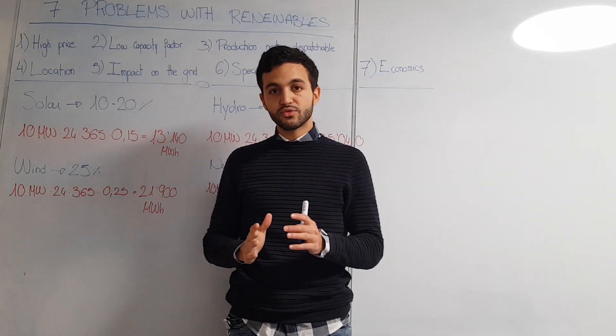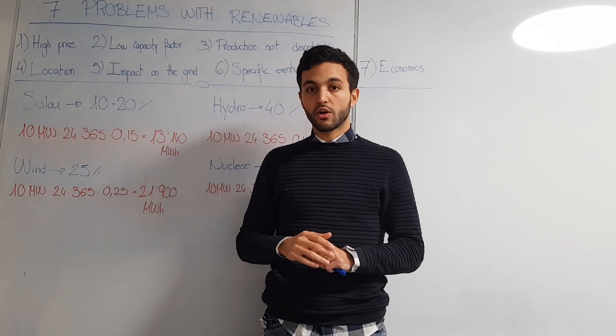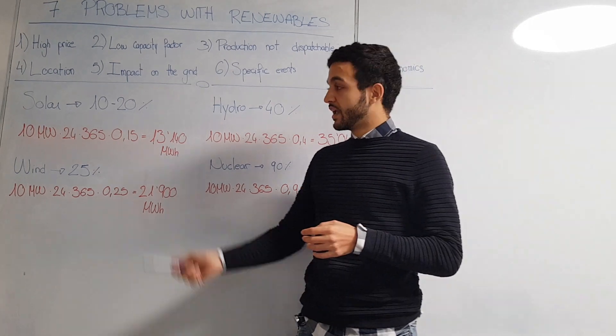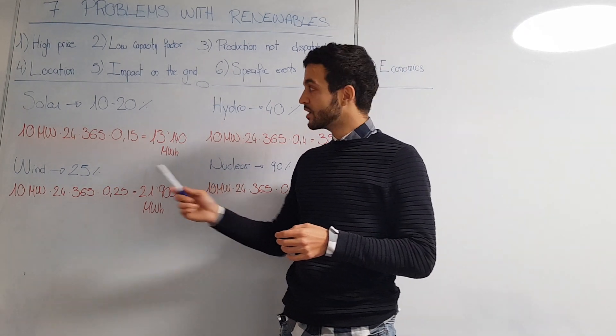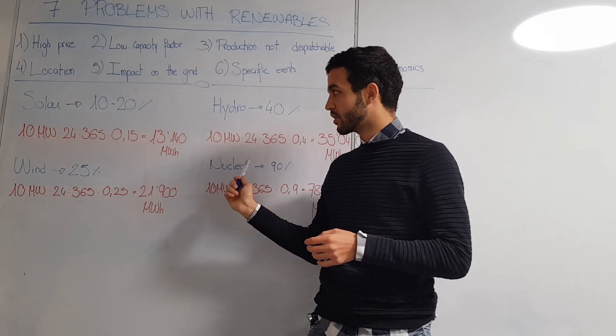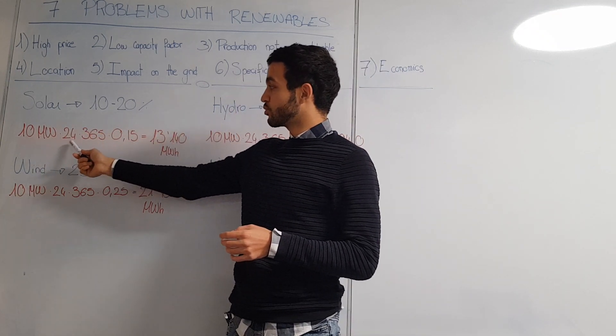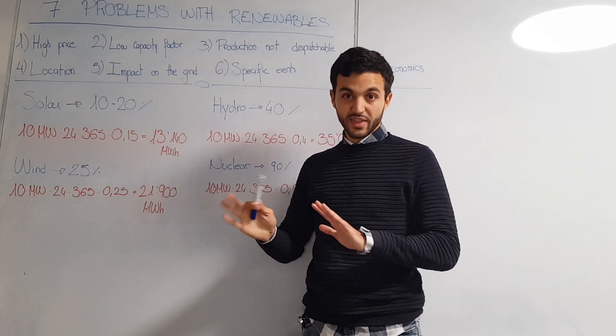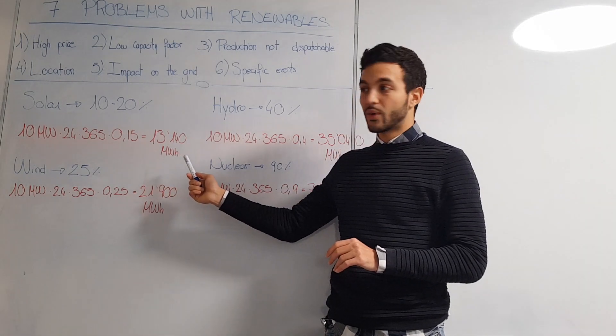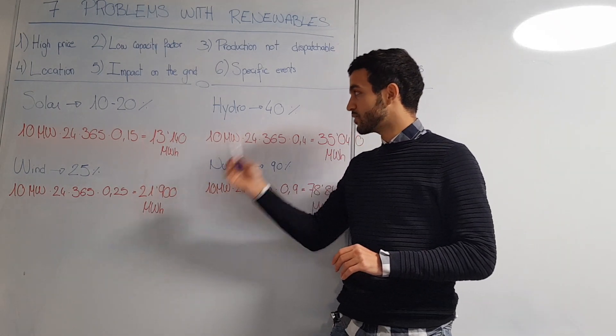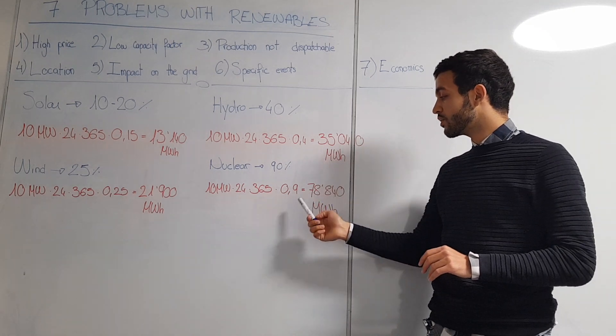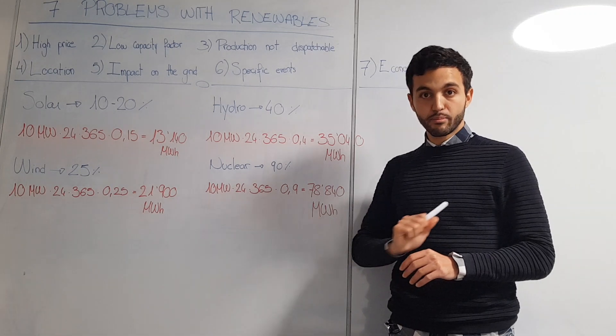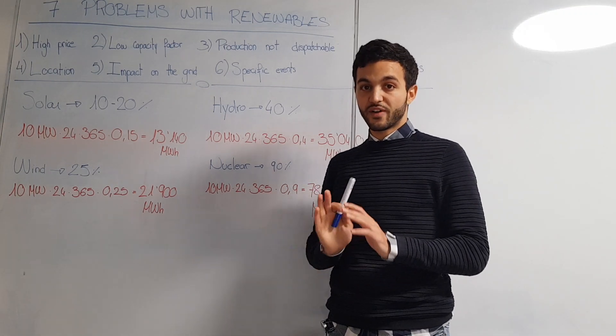Let's make a quick example to see how the capacity factor will impact your production during one year. We have four power plants, each with a power of 10 megawatts - one solar, one hydro, one wind, and one nuclear. With solar you'll make 10 megawatts times 24 times 365 times 0.15. At the end of the year, on average you would have produced 13,000 megawatt hours. With wind about 22,000, hydro 35,000 and nuclear 80,000.